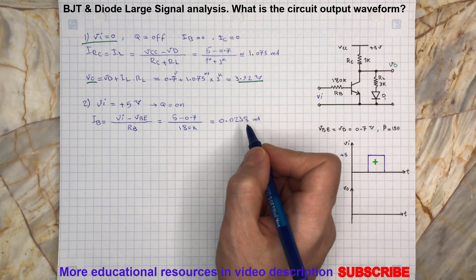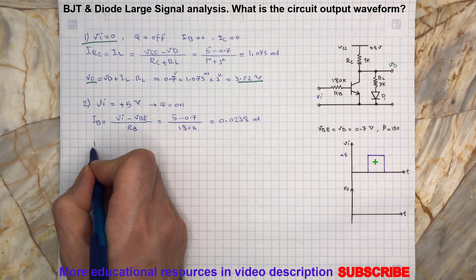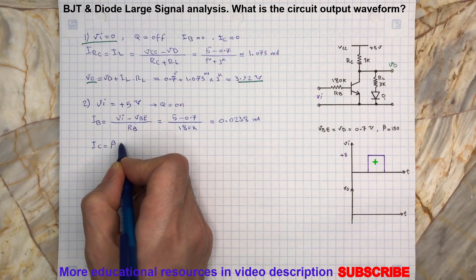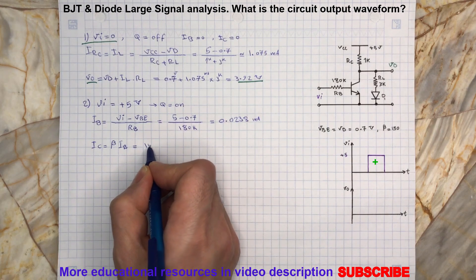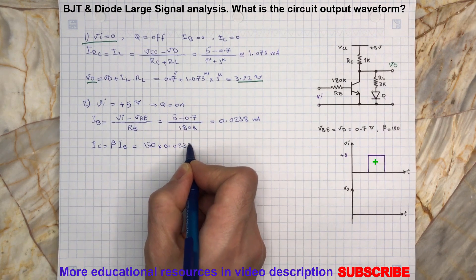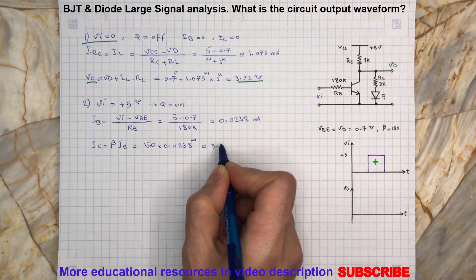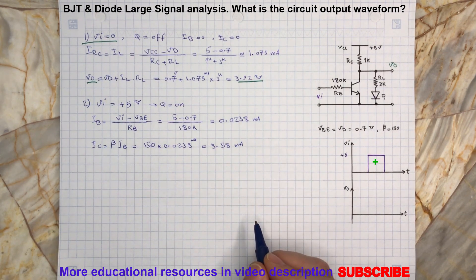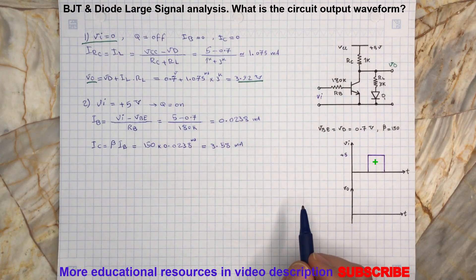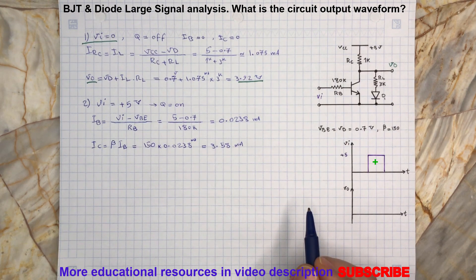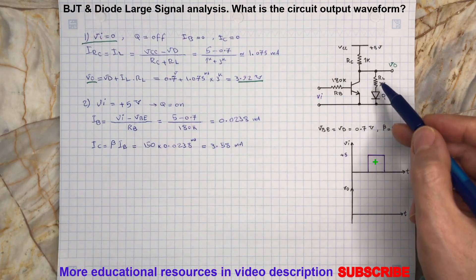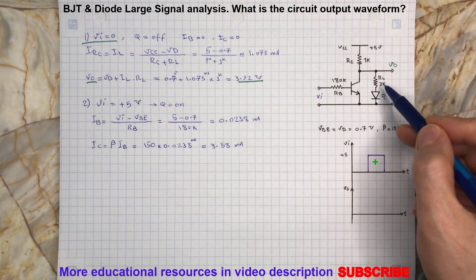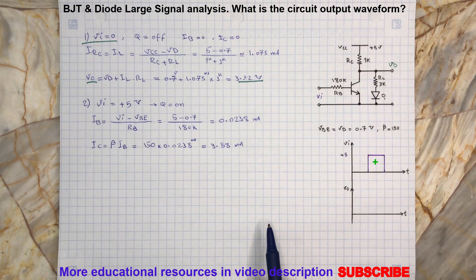Now we can also calculate the collector current since the transistor current gain beta is given. To calculate the output voltage, we need to know the total current flowing through resistor RC. That is the total current because there will be two different currents: one is the collector current IC, and the other is the current flowing through RL and the diode. We already calculated the collector current, so we need to determine the IL current in this new condition. This can be accomplished by writing a KVL from the power supply to ground.